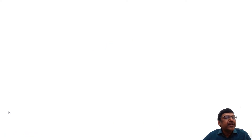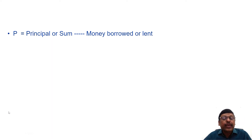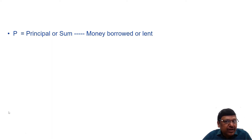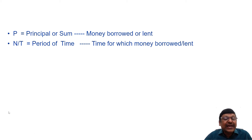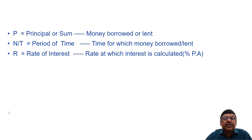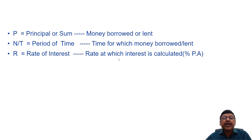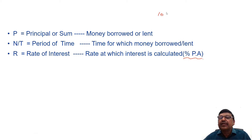The first term is P, that is Principal or Sum — this is the money borrowed or lent. The second term is N or T, that is the period of time — the time for which money is borrowed or lent. The third term is R, the rate of interest — the rate at which interest is calculated, expressed as percent per annum.